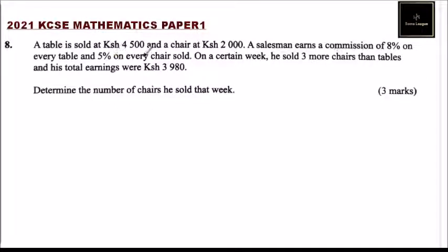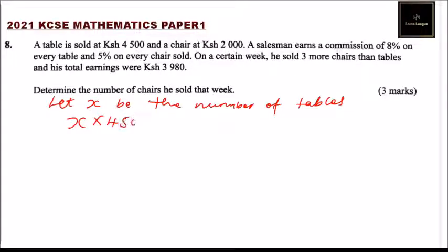So we are told the table costs 4,500 Kenyan shillings. We can start by saying let x be the number of tables. If the number of tables were x, you multiply by the cost of one table which is 4,500. This is the amount he sold for the table and he was getting a commission of 8%, so we multiply by 0.08. Then you add - he sold 3 more chairs than tables, so...